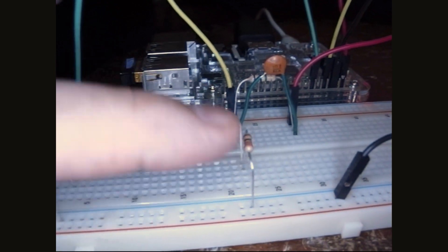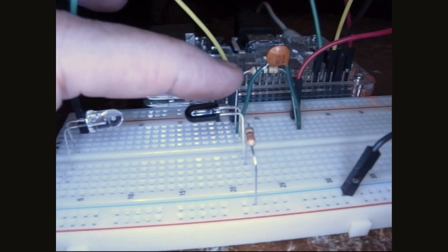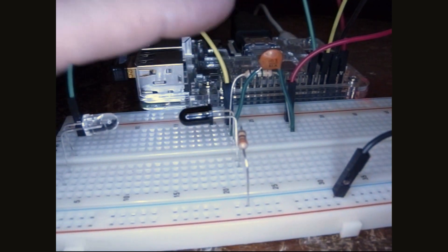On this side, we have the photodiode again, 330 ohm resistor, ground. And over on this side, we have the input pin.